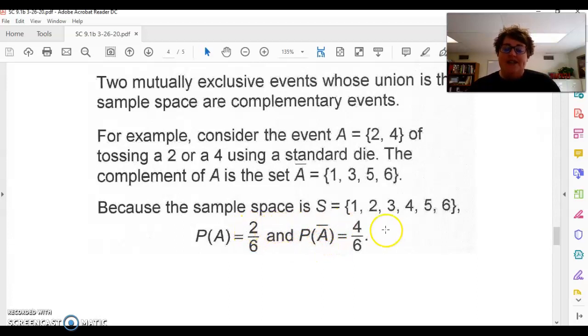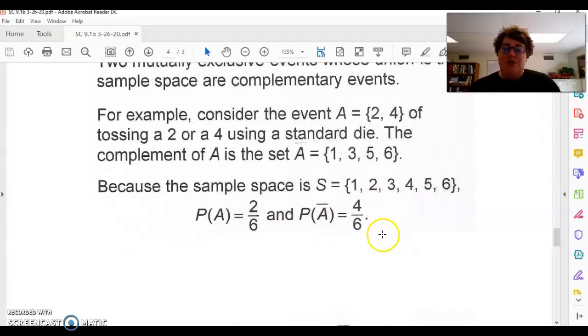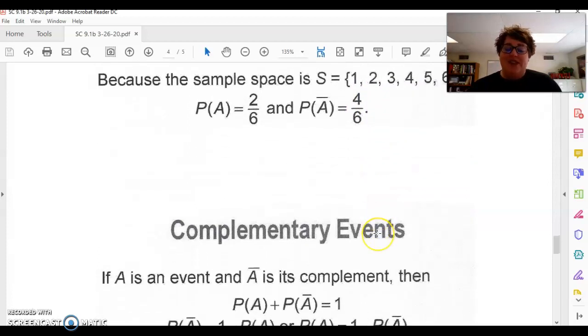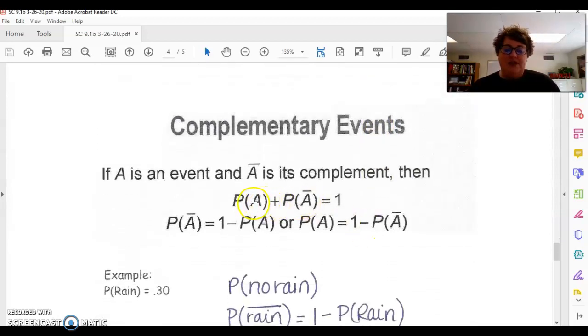It should be equivalent to 1. So if we add these together, we get 6 over 6, which is 1. And that's how you know that you've included everything. So you can find your complement doing 1 minus the probability. You can find your probability doing 1 minus the complement.